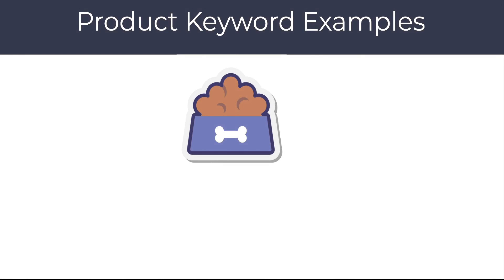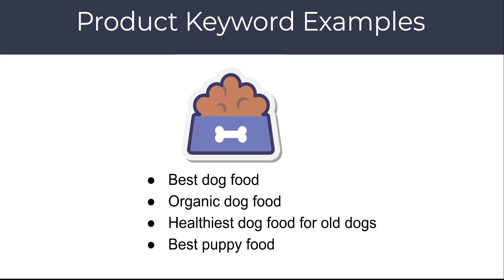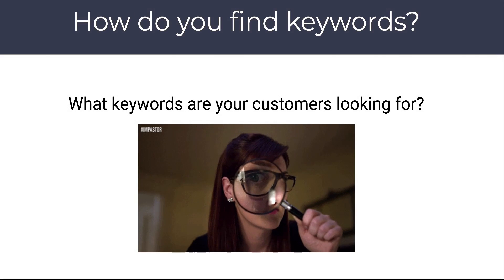An example of a product-based business — maybe you're selling dog food. They might use a term like 'best dog food' or 'organic dog food.' Perhaps they have an older dog and search for 'healthiest dog food for older dogs,' or they have a new puppy and look for 'best puppy food.' You can see here that it's not just one single word — a lot of times consumers look for a phrase.